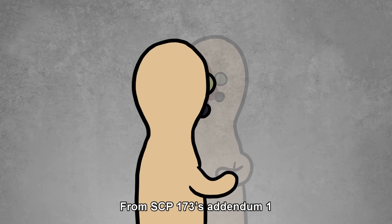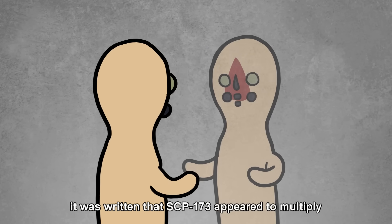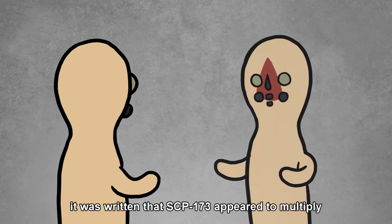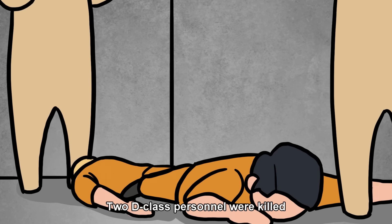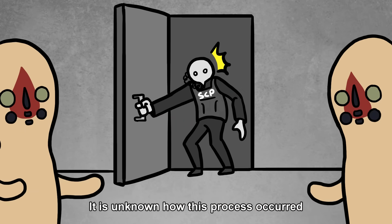From SCP-173's Addendum 1, it was written that SCP-173 appeared to multiply, producing two identical copies. Two D-class personnel were killed. It is unknown how this process occurred.